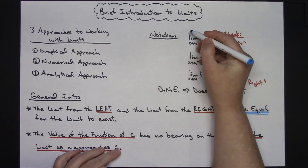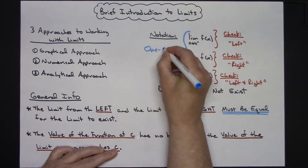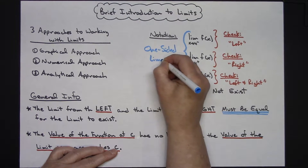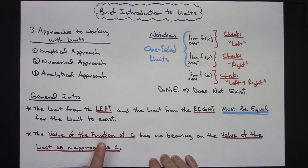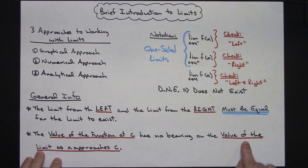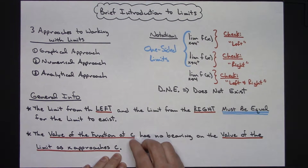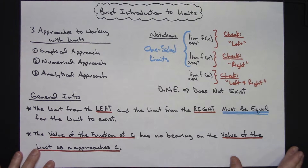The two limits written with the little plus and minus signs are called one-sided limits. One other general note: the value of the function at C — finding the value of the function at any given point, which you did a lot in pre-calc — has no bearing on the value of the limit as x approaches C. Those two answers can be totally different and have nothing to do with each other.